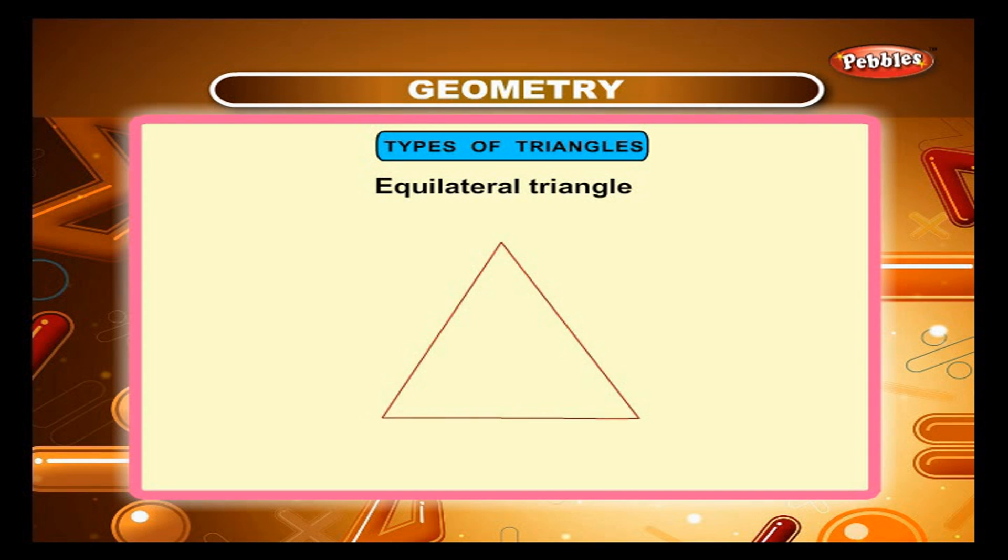A triangle with its three sides equal is called an equilateral triangle. In triangle MON, line MN is equal to line NO is equal to line MO. It also has three equal angles. Angle MNO is equal to angle MON is equal to angle NMO.